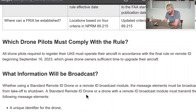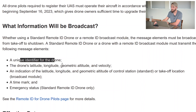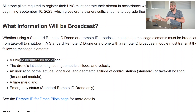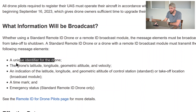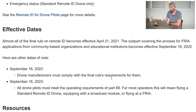What information will be broadcast? The big items are: a unique identifier for the drone; the drone's latitude, longitude, geometric altitude, and velocity; an indication of the latitude, longitude, and geometric altitude of the control station or takeoff location — that differs between the broadcast module and the standard; a time mark; and emergency status, which is for standard Remote ID drones only.